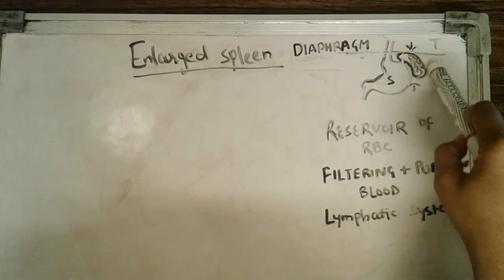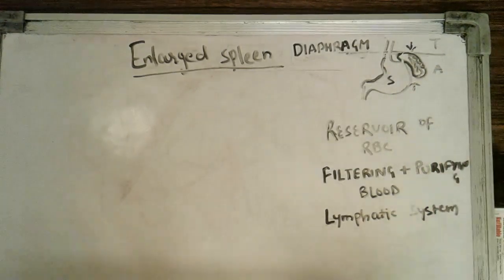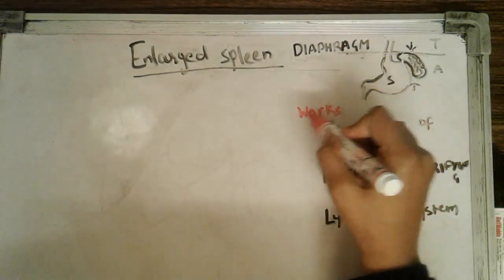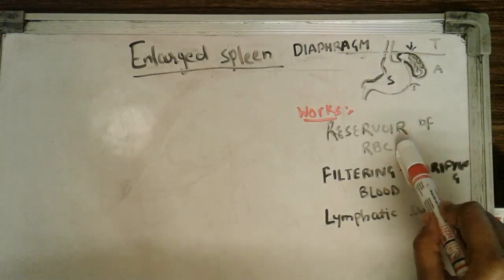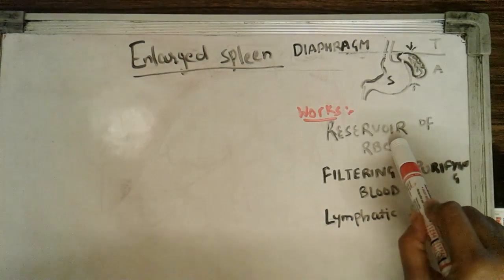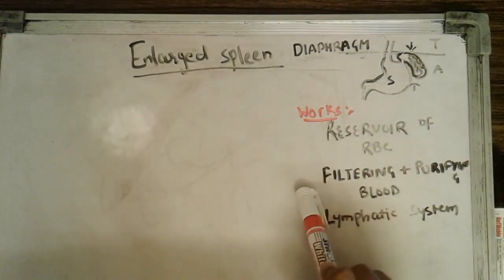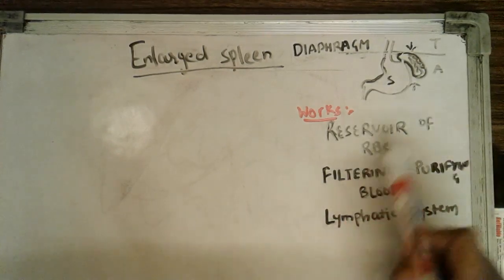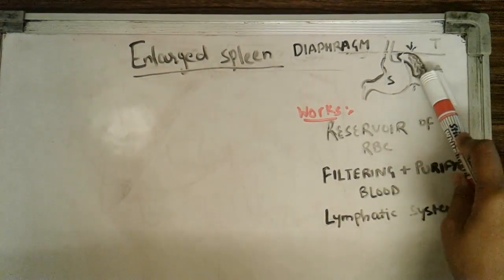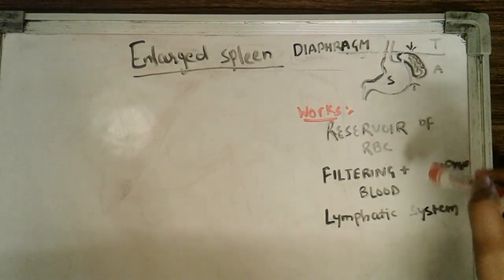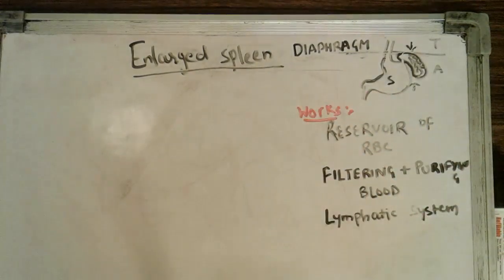The spleen is a small organ but it carries multiple functions in our body. It is a main important organ of the lymphatic system. The spleen acts as a reservoir of the RBC, and you can also call it a graveyard of the RBC — multiple RBCs and WBCs are repaired here and sent back to work. Because it filters and restores RBCs and WBCs, it acts as a filtering and purifying agent for the blood in our body.